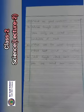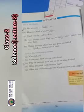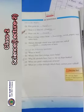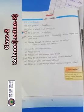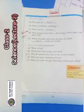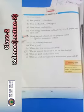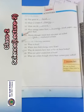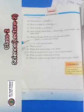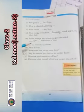Now open page number 56, question number one: Fill in the blanks. First: Fire gives us heat. Second: Heat is a kind of energy. Third: Heat can do work. Fourth: Heat energy comes from burning wood, paper, and other fuels. Fifth: Metals through which heat can pass are called good conductors of heat.